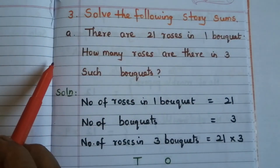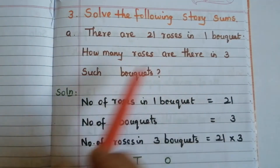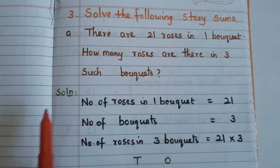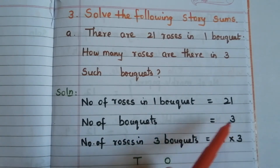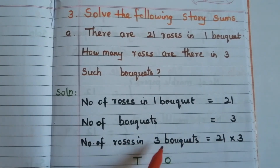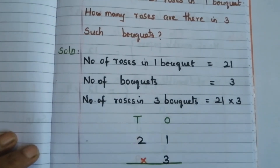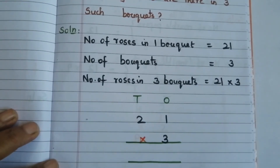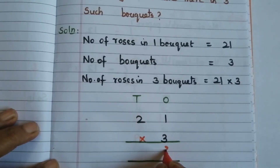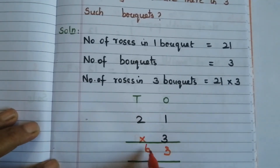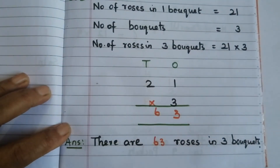Story sums — A: There are 21 roses in 1 bouquet. How many roses are there in 3 such bouquets? Solution: Number of roses in 1 bouquet = 21, number of bouquets = 3. Number of roses in 3 bouquets = 21 × 3. Write the numbers vertically: 3 ones are 3, 3 twos are 6. There are 63 roses in 3 bouquets.